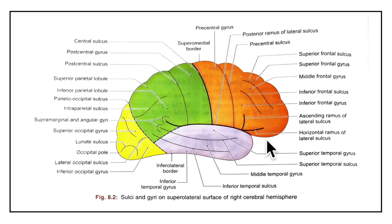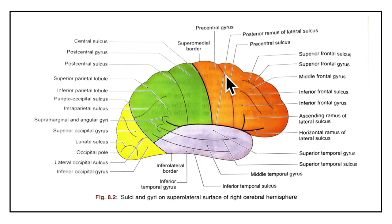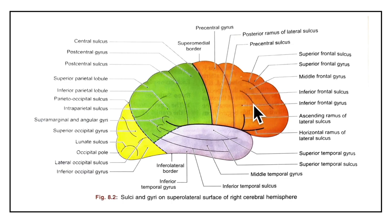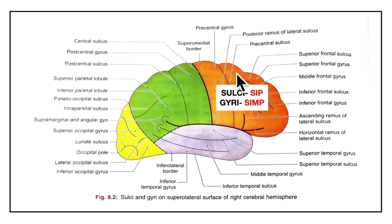Now let's learn about the most important part — the sulci and gyri of the supralateral surface, starting with the frontal lobe. In the frontal lobe we have 3 sulci and 4 gyri. The sulci are: the pre-central sulcus, the superior frontal sulcus and the inferior frontal sulcus. The gyri are: the pre-central gyrus, the superior frontal gyrus, the middle frontal gyrus and the inferior frontal gyrus. A mnemonic for the sulci is SIP — S for superior frontal, I for inferior frontal, P for pre-central sulcus. For the gyri, use SIMP — S for superior frontal, I for inferior frontal, M for middle frontal, P for pre-central gyrus.